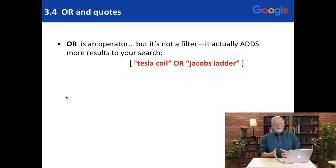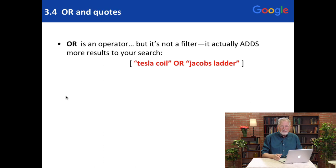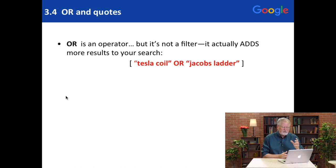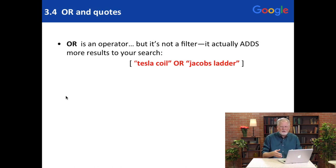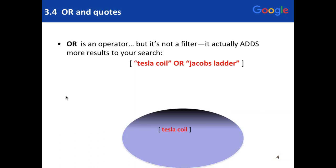The other operator I mentioned is the OR operator. OR is a classic Boolean operator — it's kind of the only thing really left of ordinary Boolean logic in Google. It basically allows you to say: search for this or for that. Here's my example: I want to search for 'Tesla coil' or 'Jacob's Ladder.' OR takes the first part of the query — just the Tesla coil search — and when you OR in an additional phrase or term, it enlarges the set of results. That's what OR does.